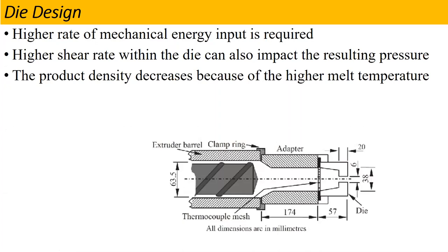The product density decreases because of higher melt temperature. When we reduce the opening of the die, the pressure builds up, the temperature of the product increases, and the density of the product is reduced.